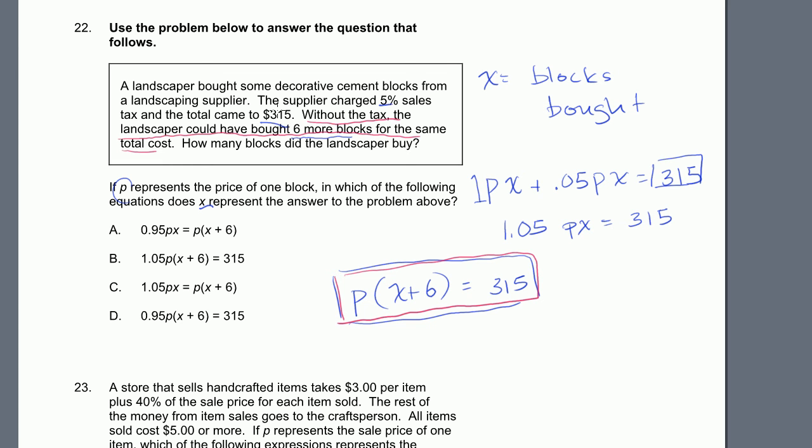The supplier charged 5% sales tax and the total came to 315. That gave us this equation right here. The second one said without the tax, for $315, he could have bought 6 more blocks. So we get this one right here. Notice, both of these equations equal 315. So we could set this equal to that. So we could say p times x plus 6 is equal to 1.05 times price times x. And let's see if that looks like anything we have here. p times x plus 6 is equal to 1.05 px. So the answer is C. We're just saying both of these things equal 315, so we set them equal to each other.